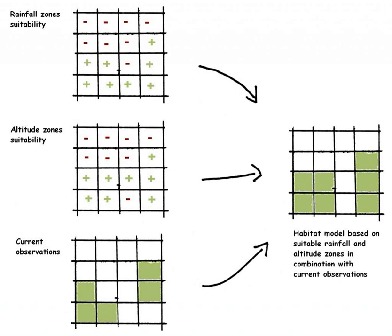The environment is in most cases represented by climate data such as temperature and precipitation, but other variables such as soil type, water depth, and land cover can also be used.